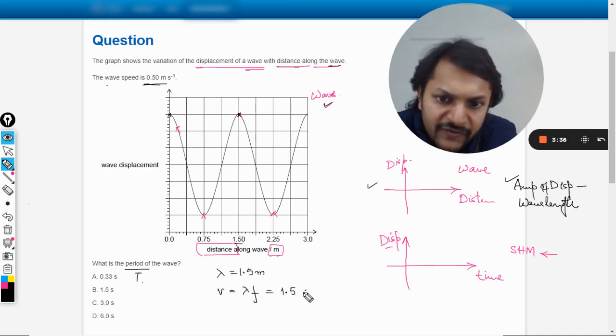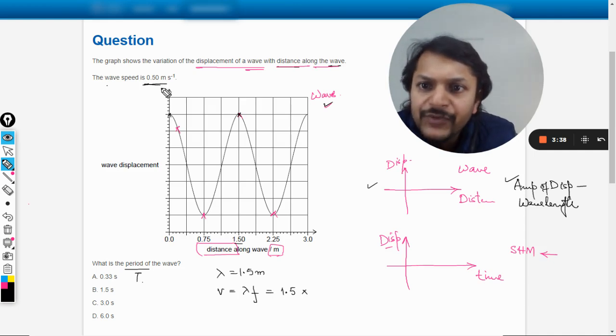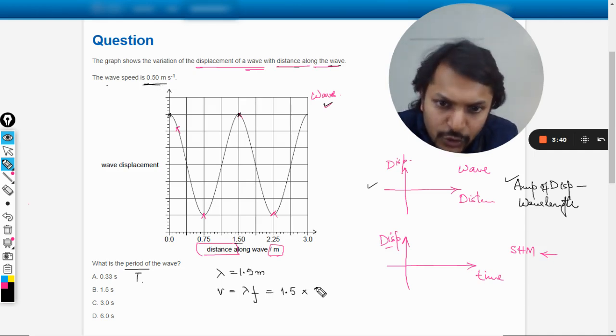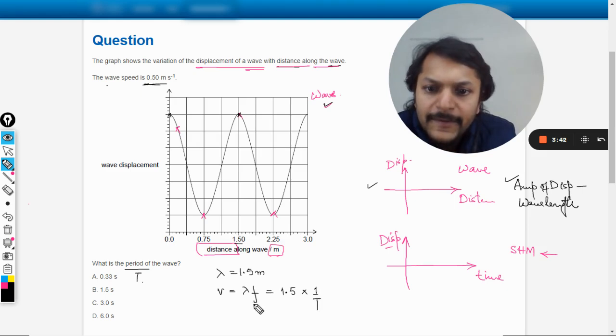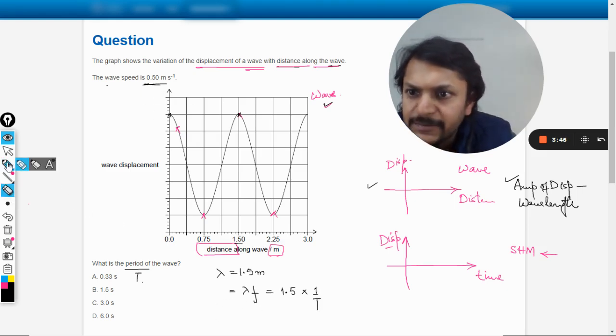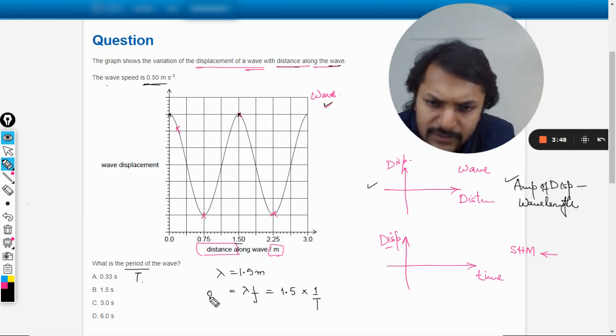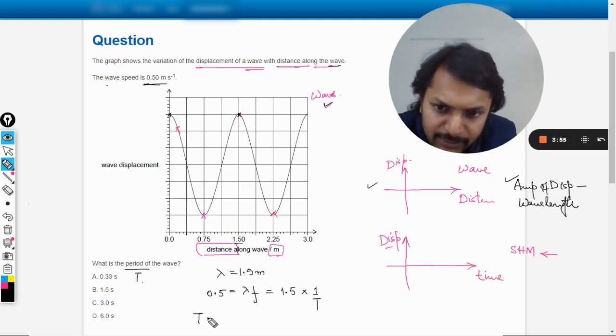Now velocity is lambda into f, so the wavelength is 1.5 multiplied by the frequency, and frequency we don't know - 1 by T. And the velocity is given as 0.5. So I can just substitute this here, 0.5. And so from here I can find the time period. So time period comes out to be equal to 1.5 divided by 0.5, and hence 3 seconds. So our answer will be C.